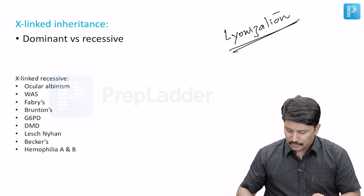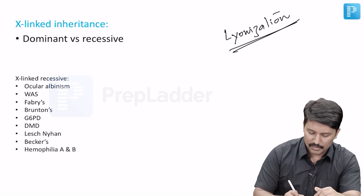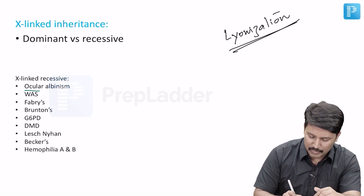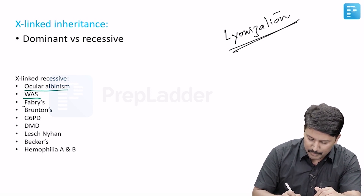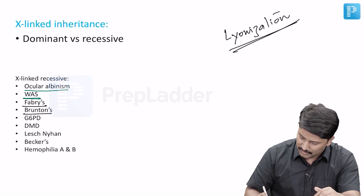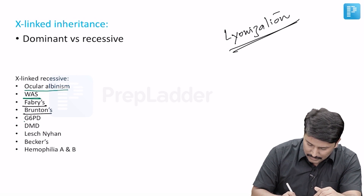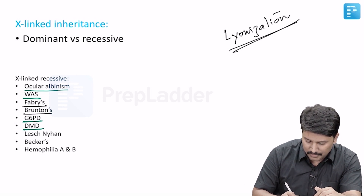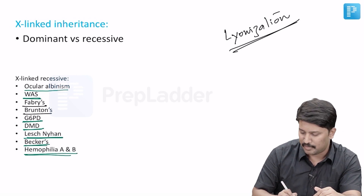Examples for X-linked recessive, which are more common than X-linked dominant, include ocular albinism, Wiskott-Aldrich syndrome, Fabry's disease, Bruton's agammaglobulinemia, G6PD deficiency, Duchenne muscular dystrophy, Lesch-Nyhan syndrome, Becker's muscular dystrophy, and hemophilia A and B.